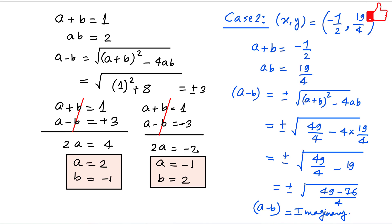So there are only two real solution pairs: (a,b)=(2,−1) and (a,b)=(−1,2). I hope you enjoyed this video. Please share with your friends, like this video, and subscribe to my channel. Thanks for watching!